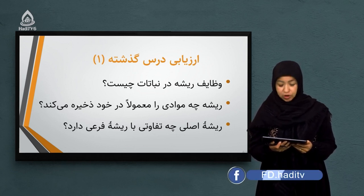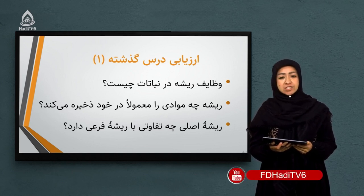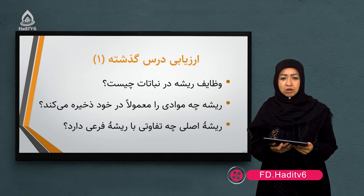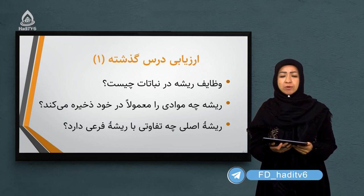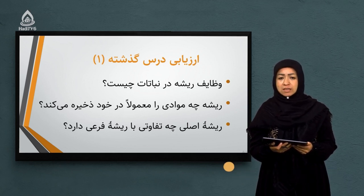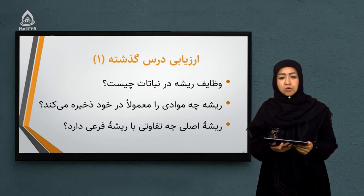سوال اول: وظایف ریشه در نباتات چیست؟ اگر درس گذشته را به یاد داشته باشید، برای ریشه چند وظیفه گفتیم. وظیفه اول اینکه ریشه مواد آب و مواد معدنی را از خاک جذب میکند و در اختیار ساقه قرار میدهد. وظیفه دوم اینکه گیاه یا نبات را روی خاک استوار نگه میدارد. وظیفه سوم اینکه در بعضی از نباتات مواد غذایی را در خود ذخیره میکند.